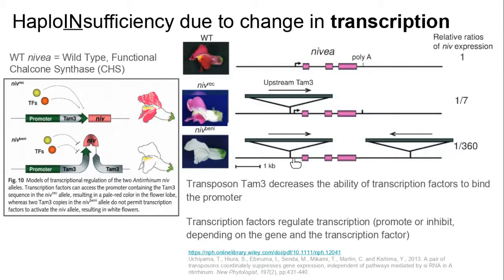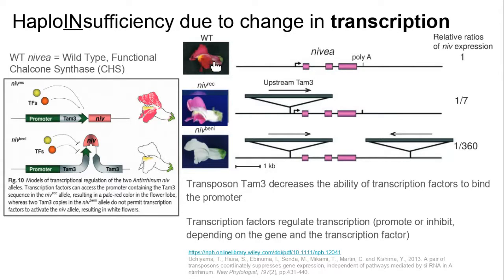Maybe I'll do a poll. The poll will be: if your gene sequence is the same, and your promoter sequence is the same — the same as the functional one — but the sequence of the transcription factor is changed, can that change the phenotype?